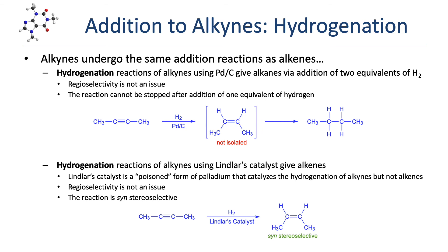The hydrogenation of an alkyne can be stopped after a single addition under special conditions. Using Lindlar's catalyst results in the formation of an alkene. The reaction is syn-stereoselective, forming a cis-alkene from the reaction of an internal alkyne. Lindlar's catalyst is a poisoned form of palladium that is reactive enough to catalyze the reaction of the less stable alkyne, but prevents the reaction of the more stable alkene.